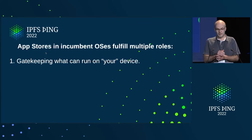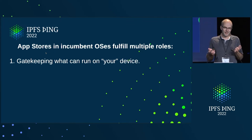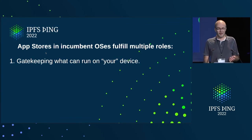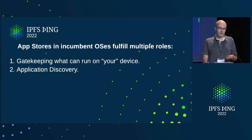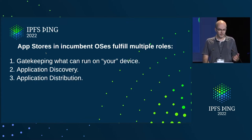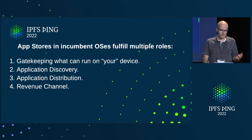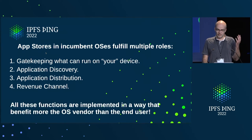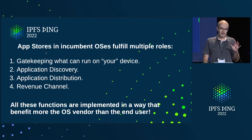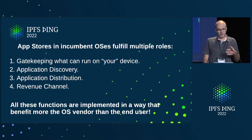The app store is a gatekeeper of what you can run on your device. It's your device, but actually it's Apple that decides what you can do with it. It provides application discovery — you'd have no other way to find apps except going to your app store. It also provides distribution for developers and a revenue channel for the OS vendor and developers. All these functions, I don't think they benefit the user much in the way they're implemented. It's mostly to bring stuff back to the OS vendor.